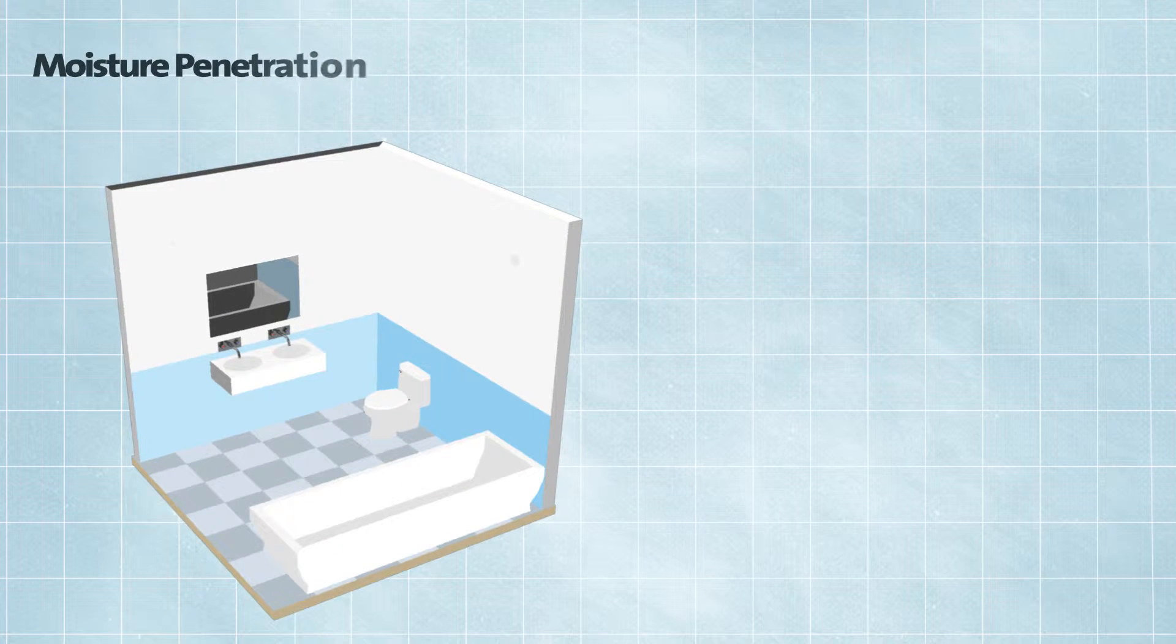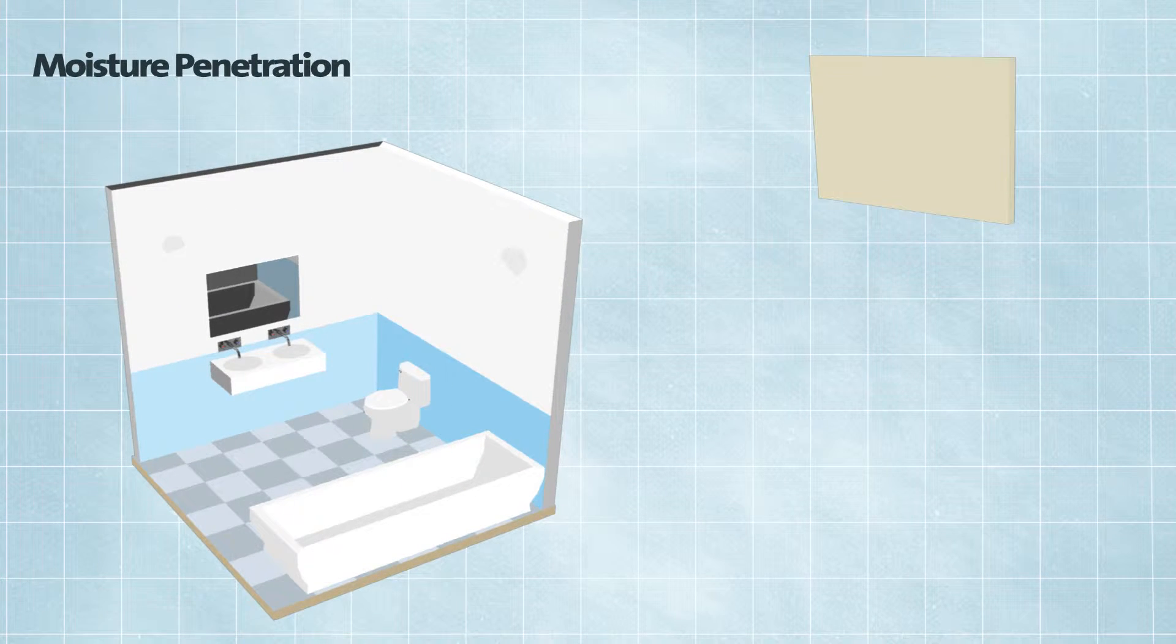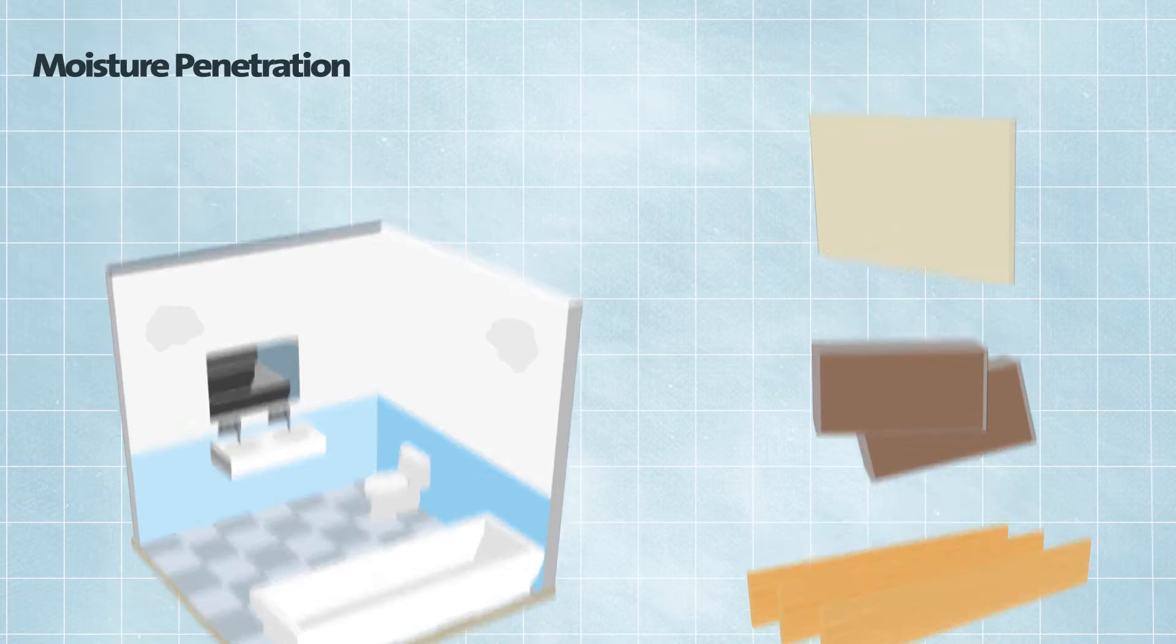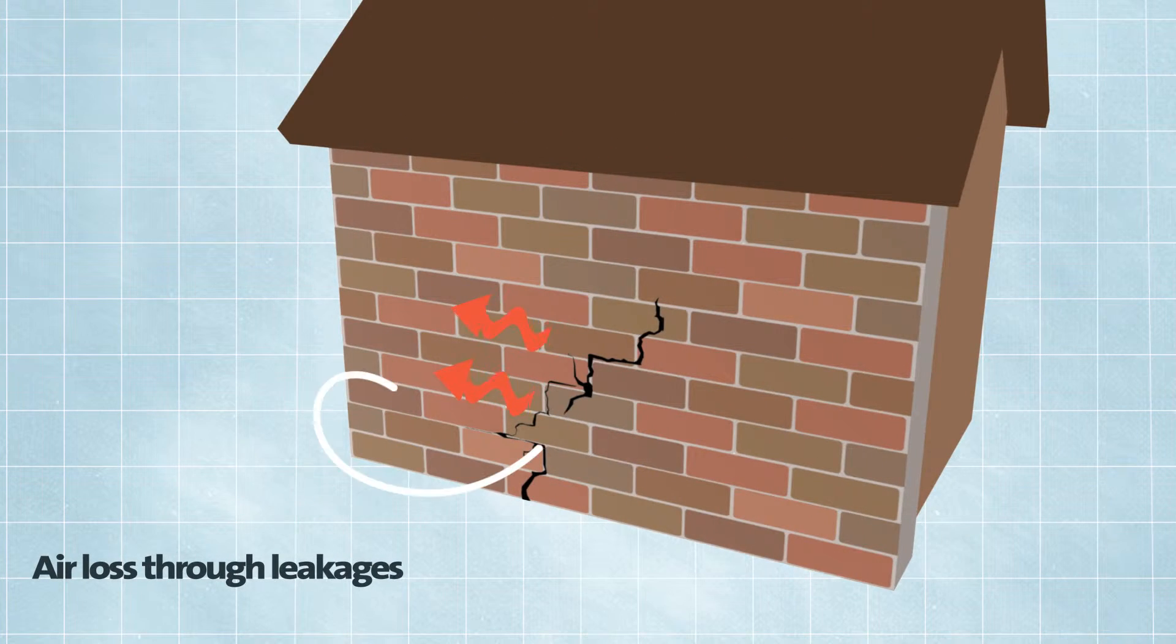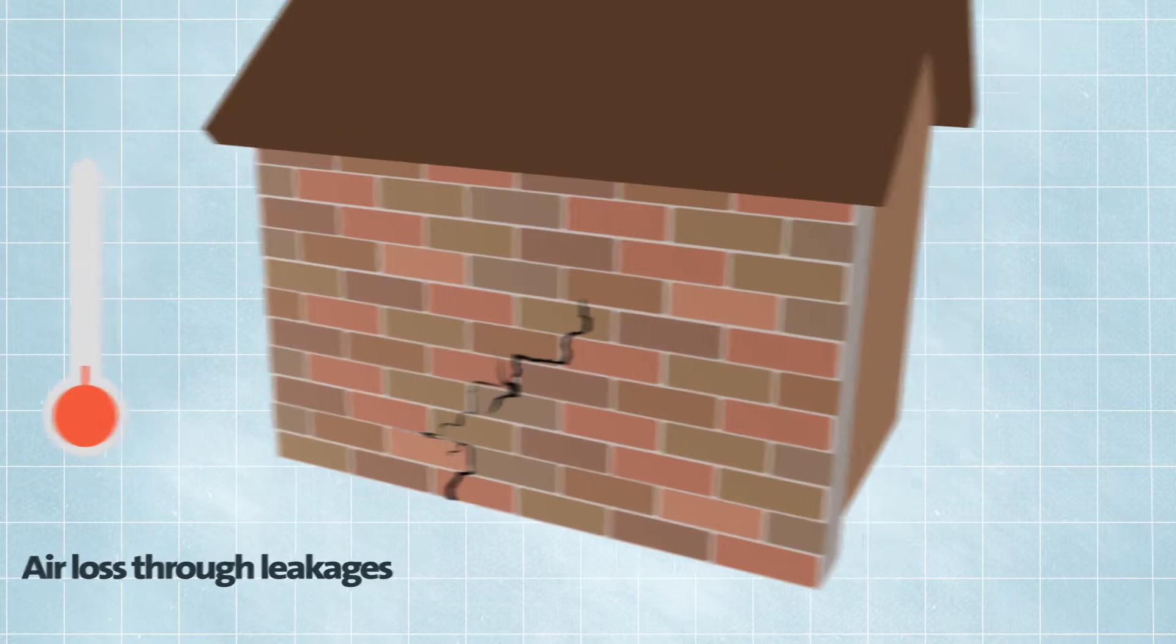Moisture penetration leads to damage to plaster work, bricks, mortar, timbers and roof joists. It can also cause black mold which is both unsightly and can cause health issues. Cracks and gaps in the structure can often cause air and heat loss resulting in poor thermal performance.